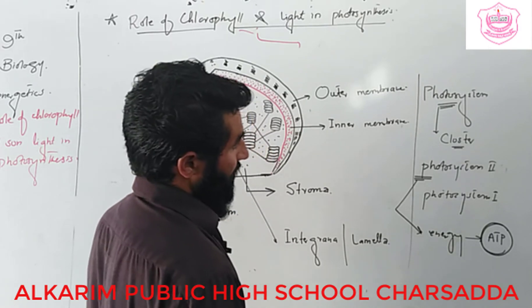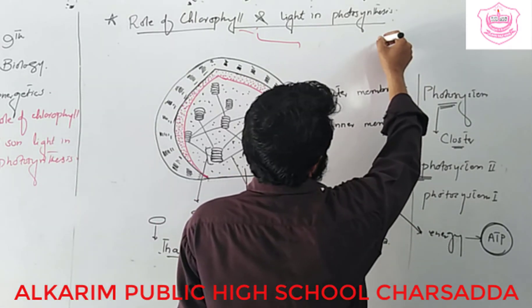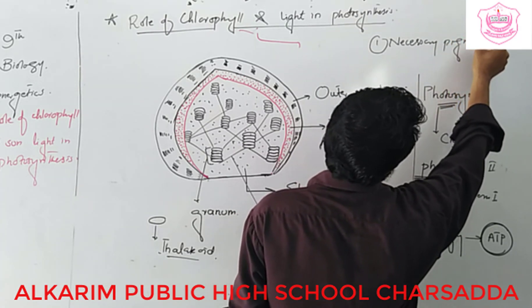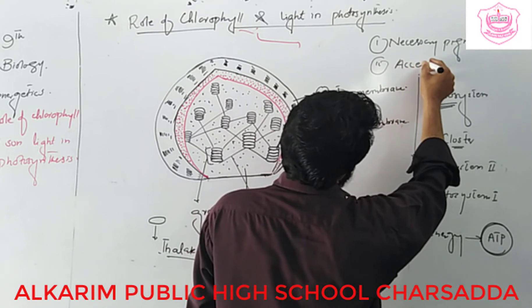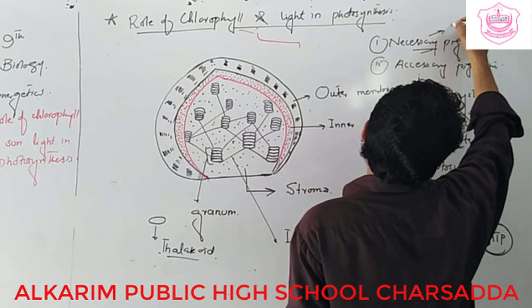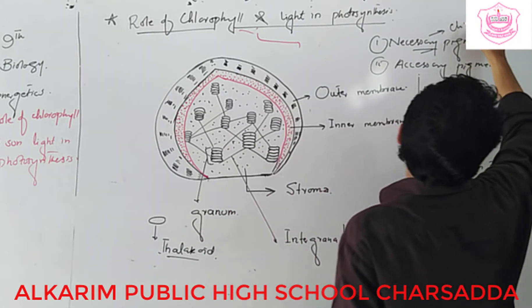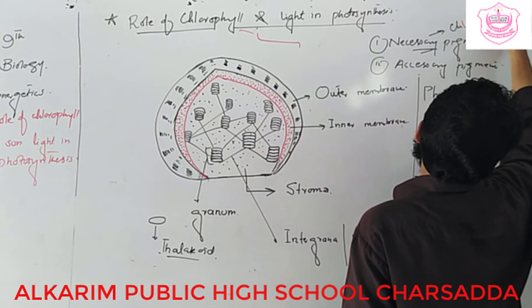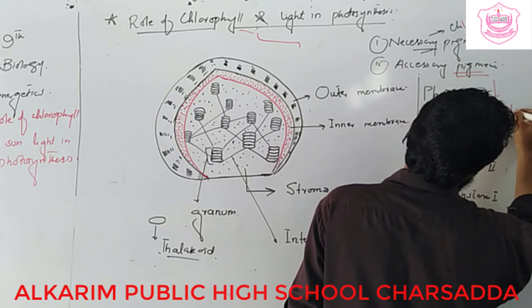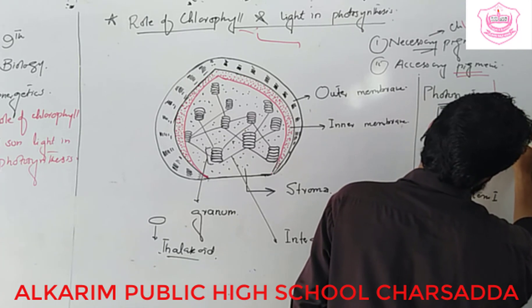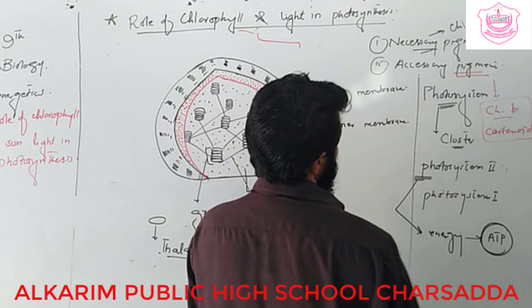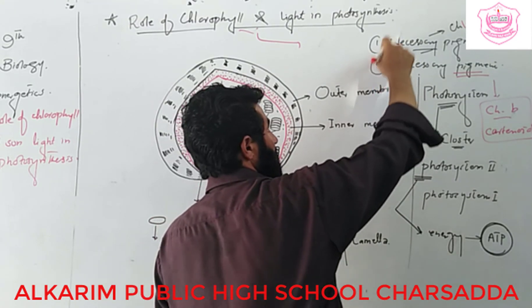There are two types of photosynthetic pigments: one is known as the necessary pigment and the other is the accessory pigment. Chlorophyll A is the necessary pigment, while chlorophyll B and carotene are accessory pigments. Some photons are easily absorbed by accessory pigments that are not absorbed by the necessary pigment.